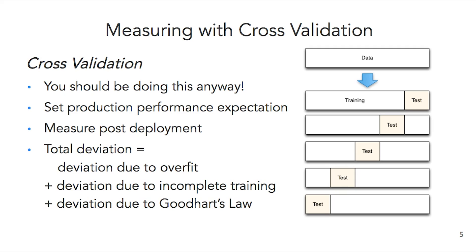So why would a model's results in a production environment differ from training examples? I like to think that's due to three cases. First, overfitting — that's the obvious one. Second, incomplete training, either from not having enough examples or, more commonly, having a limited training set that doesn't reflect the full real-world system — for example, training on only US-based visitors and assuming it applies internationally. But lastly, and perhaps most importantly for this talk, there's deviation due to Goodhart's Law: the results your model achieved on training data may not generalize because the actual system you deploy into may end up changing as a result of the model's presence.